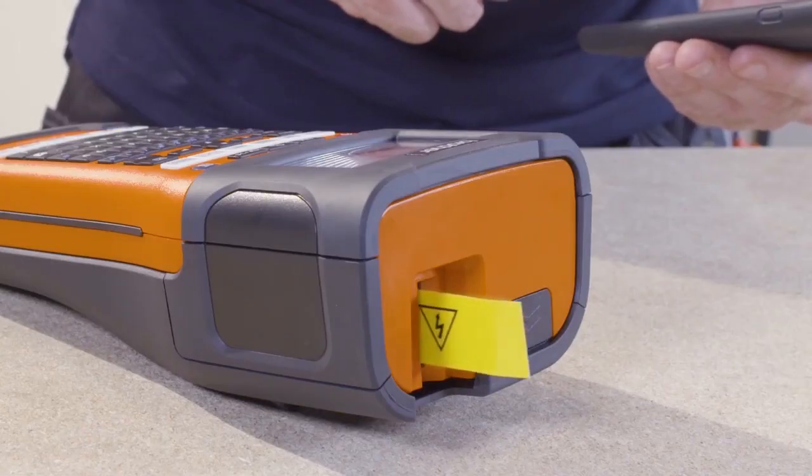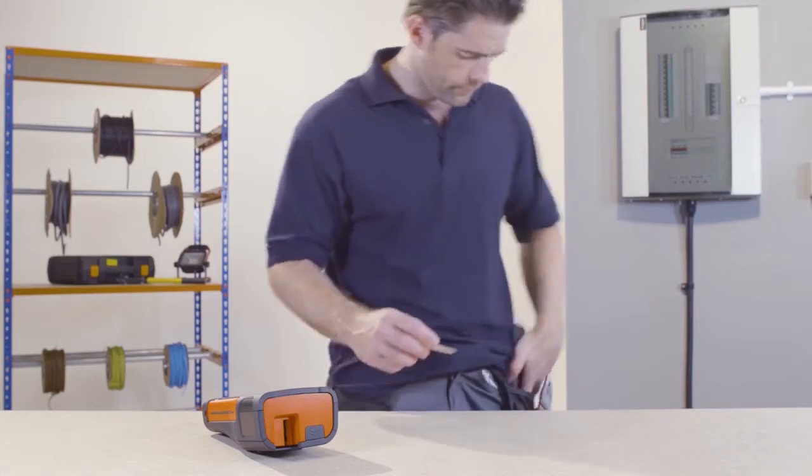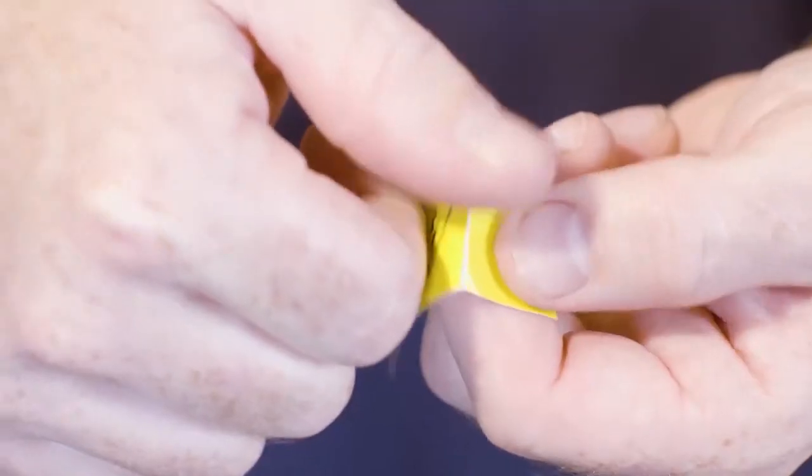Once printed, simply use the Easy Peel feature to apply the professional and compliant label to your equipment.